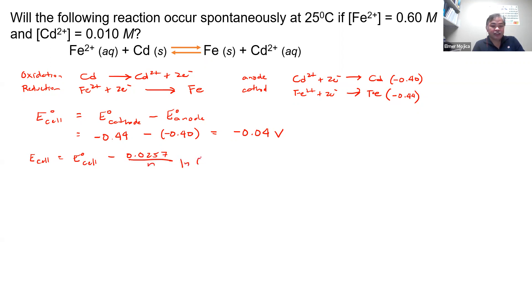And you have here the LN of Q. So Q here will just be your product over the reactant, which in this case is cadmium 2+ over Fe2+. So you replace this with negative 0.04 minus 0.0257 over 2, and LN, the given concentration that you have here, cadmium is 0.01 and Fe is 0.60.